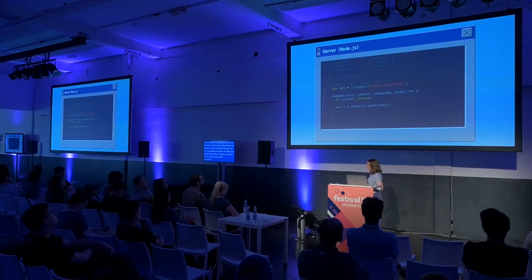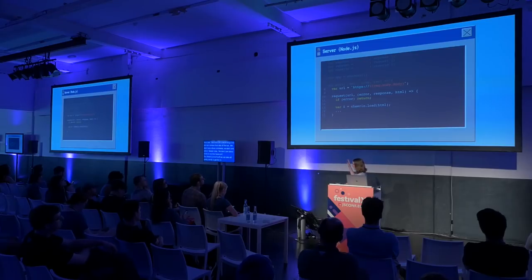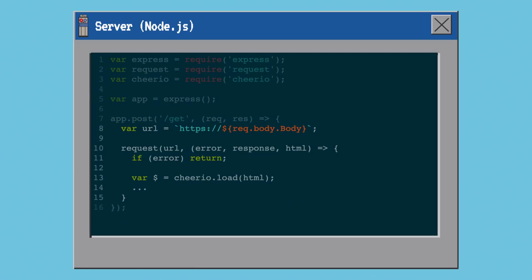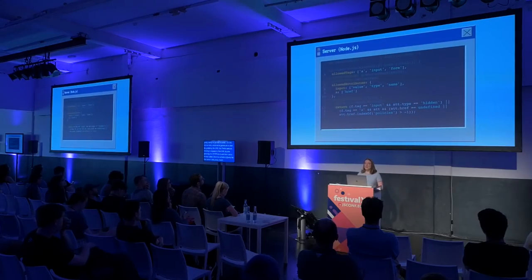On the server side, we start by grabbing the URL that Twilio sent us, making a request to that URL by prepending the HTTPS to it, and then we use a library called Cheerio — which is basically jQuery for the server side — and we use that to get the body off of the HTML, because jQuery makes that quite easy.